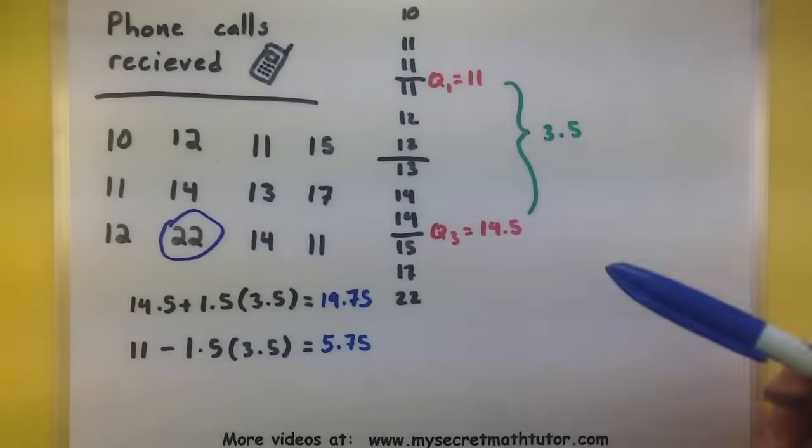So remember that you've got to find a few different bits of information first, but this is how you go about finding your outliers.